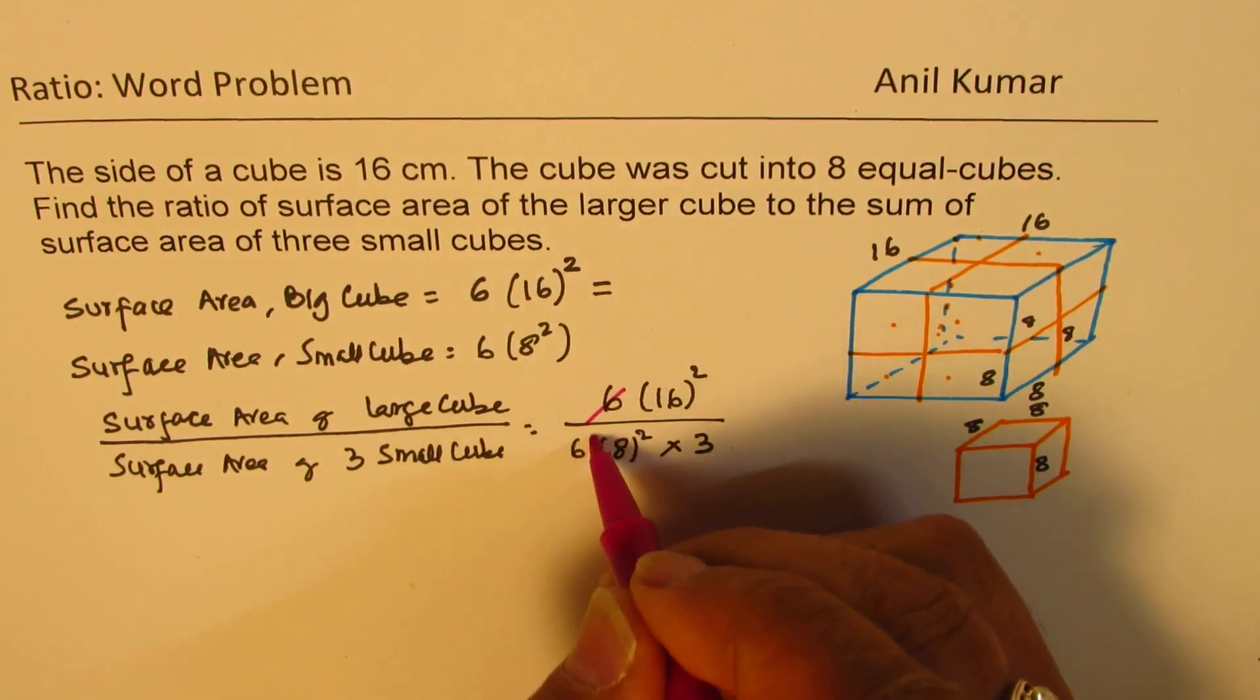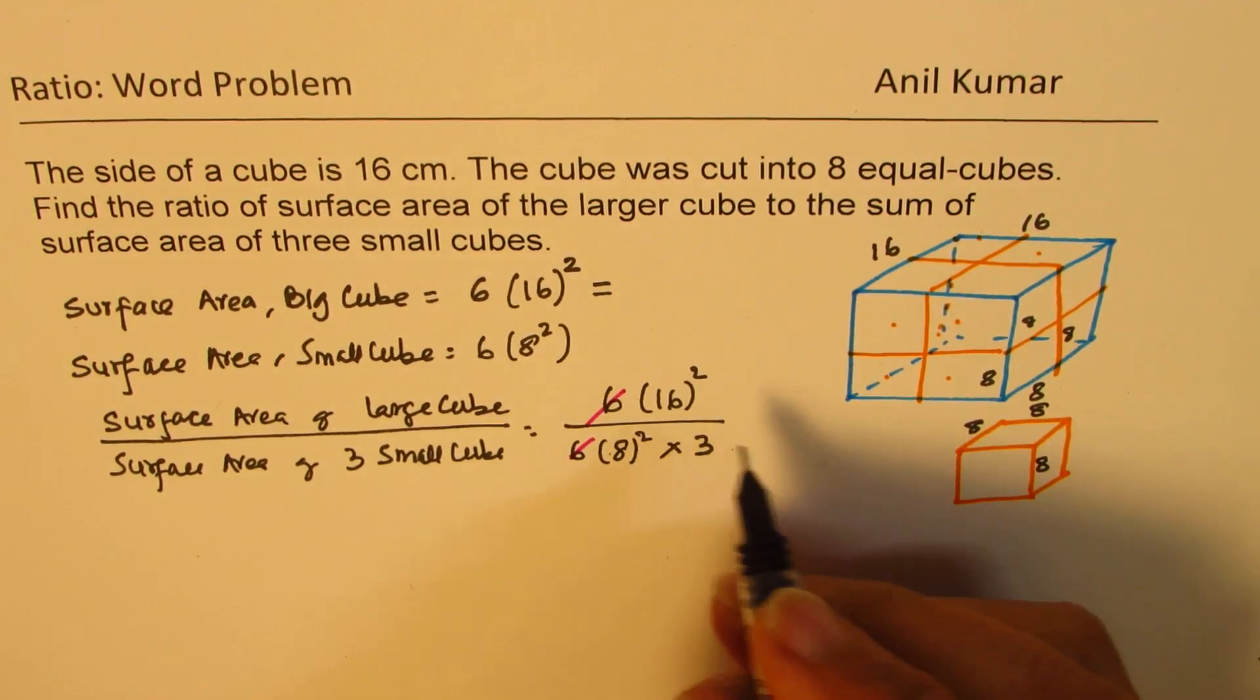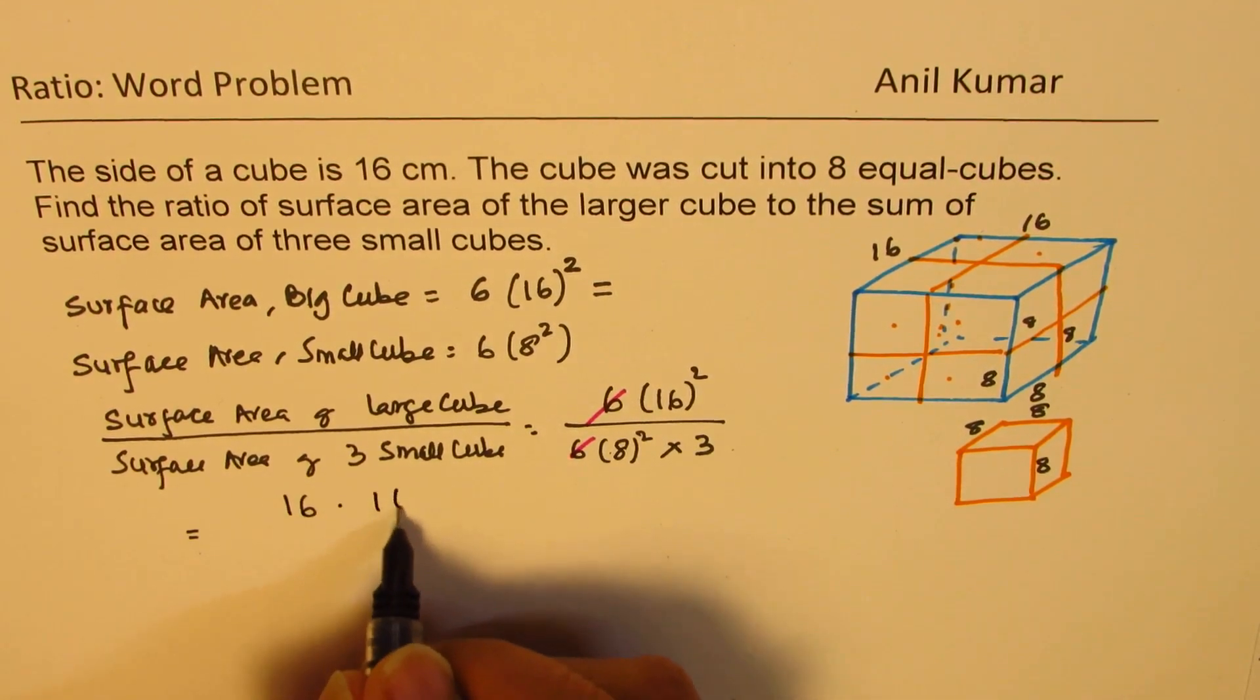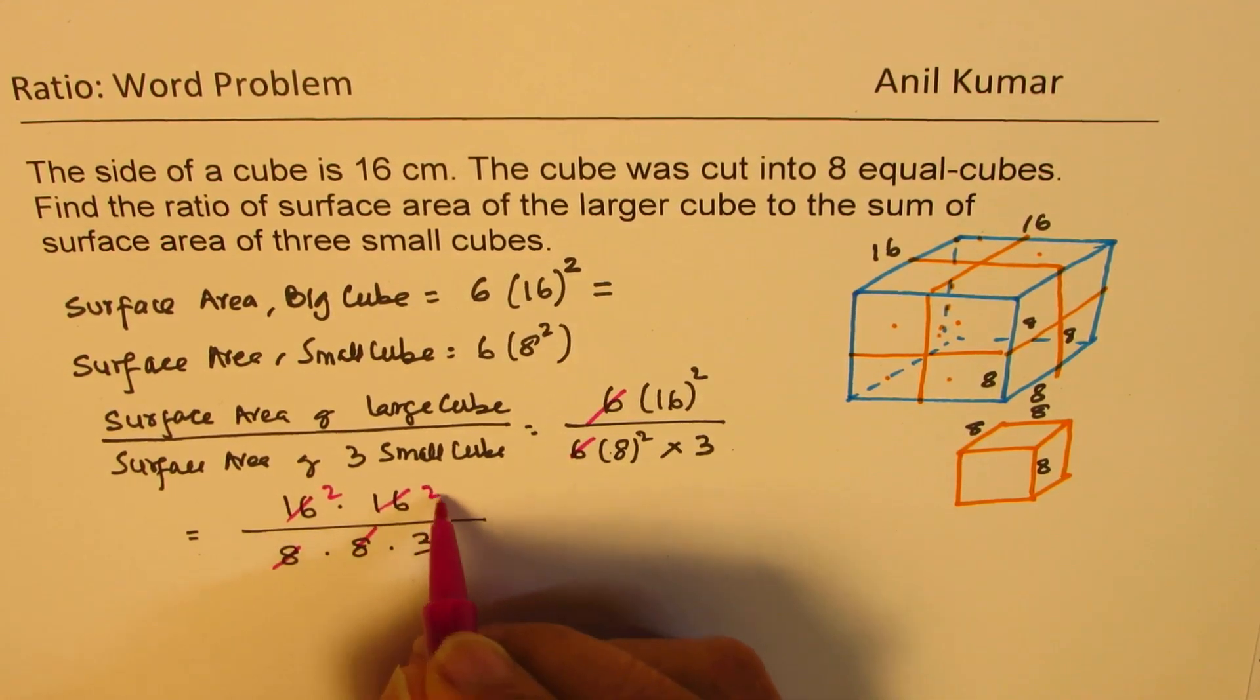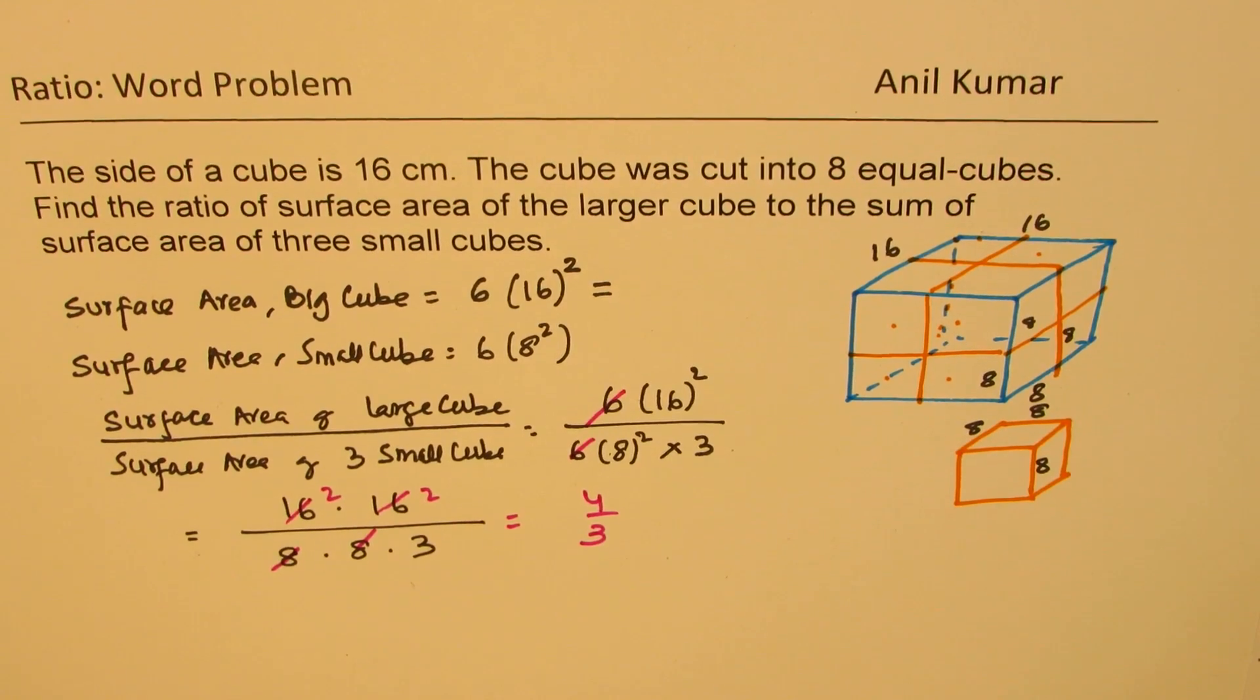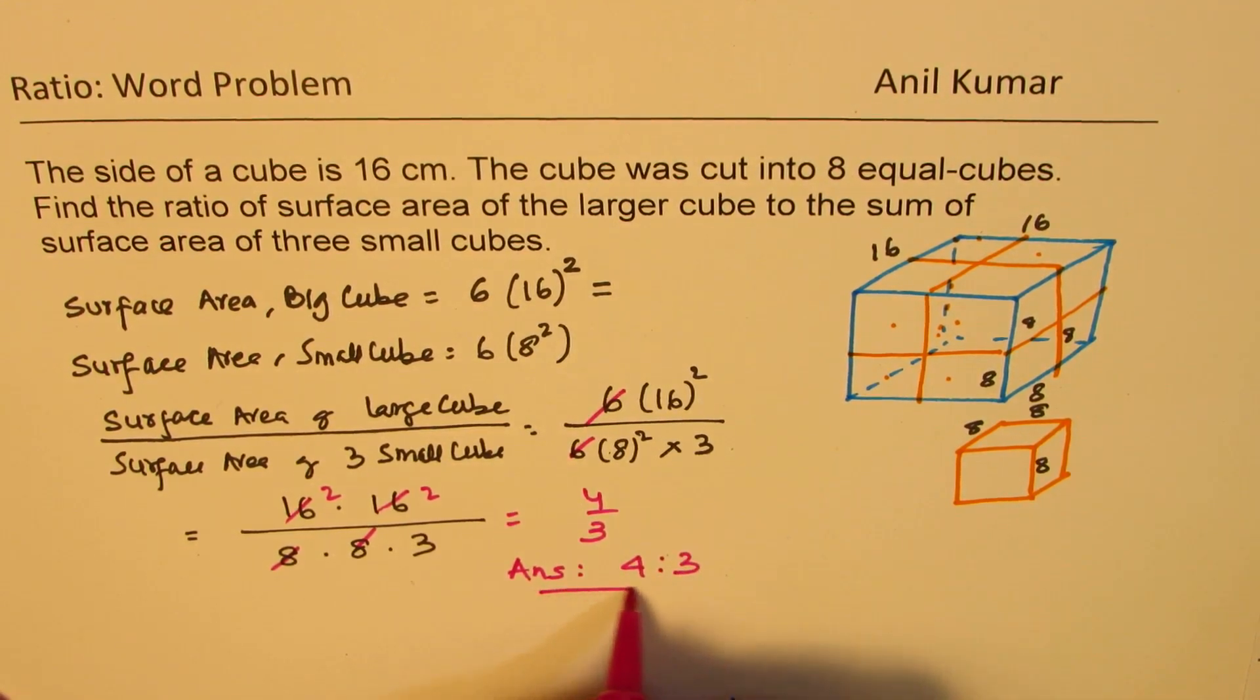To simplify, we can just cancel this. We can have a simpler calculation here also. So we are writing 16 times 16 over eight times eight times three. As you can see, it goes two times. It also goes two times. So we get four over three. So our answer is the ratio is four is to three. That becomes the solution for the given question.